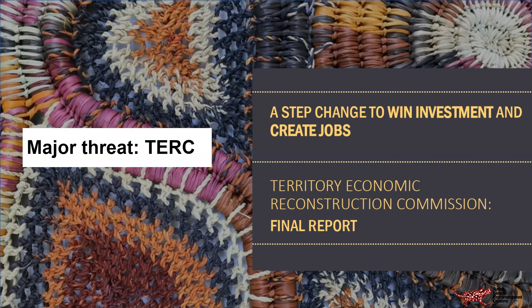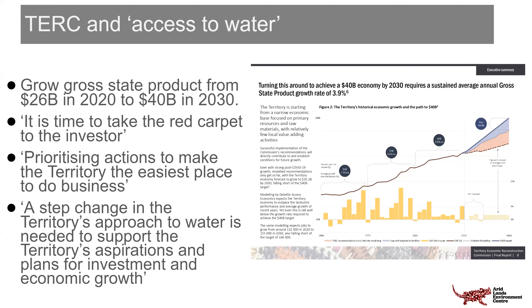At the end of 2020, similarly to how Scott Morrison developed a gas-led recovery, Andrew Liberis — who sat on that panel — chaired the Territory Economic Reconstruction Commission. The Territory has its own gas-led and water-led recovery, known as the TERC. It's trying to grow the Northern Territory economy from $26 billion in 2020 to $40 billion in 2030. It's explicitly an investor-led approach, wanting to roll out the red carpet to investors. A key pillar alongside gas and resource extraction is water — water for supporting enterprises and for irrigated agriculture.